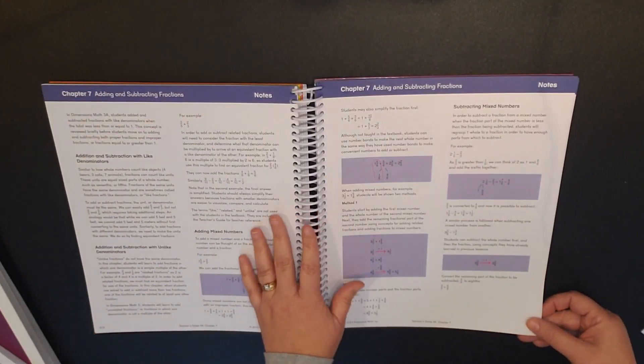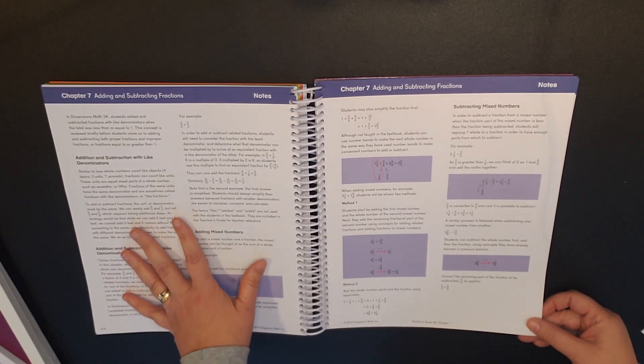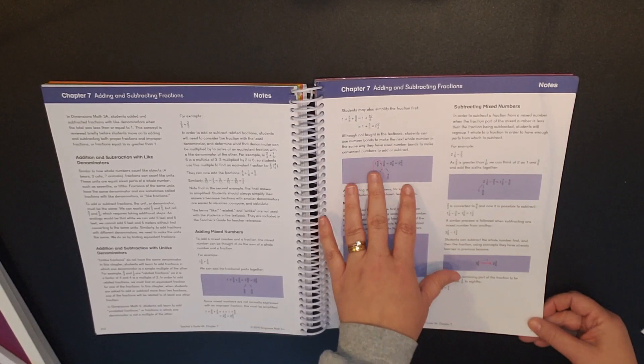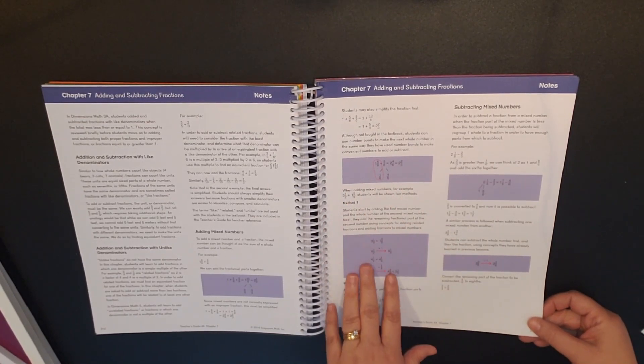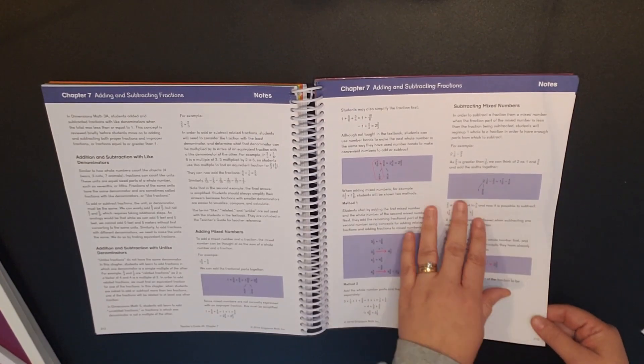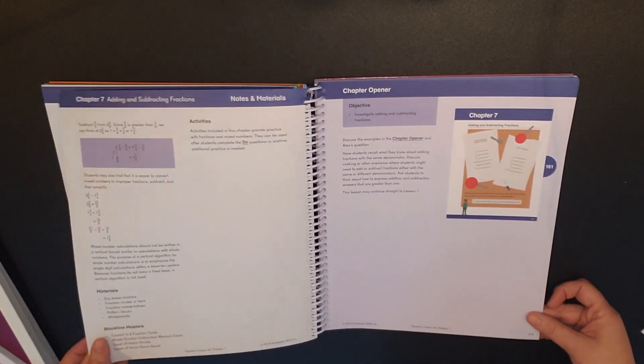The beginning notes for each chapter really gives you ideas of how to teach the lesson and it gives you multiple methods. So here's method 1 for fractions and then method 2.